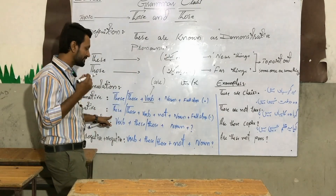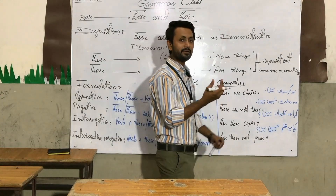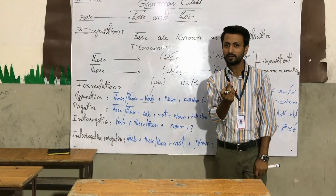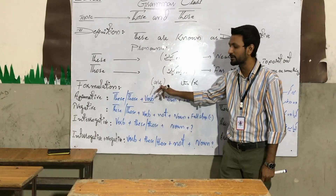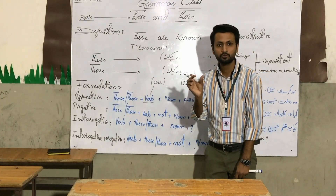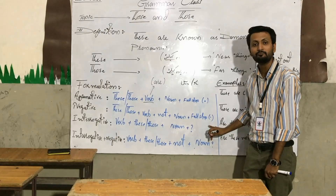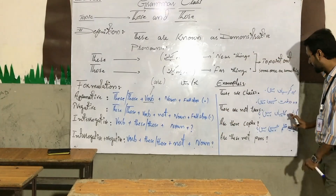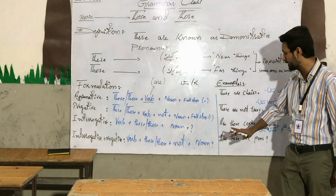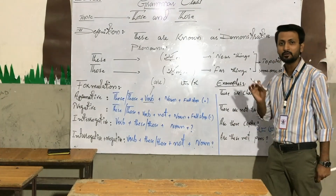Next is the negative sentence. For a negative sentence, you will write 'these' or 'those' according to the Urdu, then after that you will use the verb 'are', and then you will use 'not', and then the noun in plural form, and then a full stop. The example is: 'Those are not trees.'